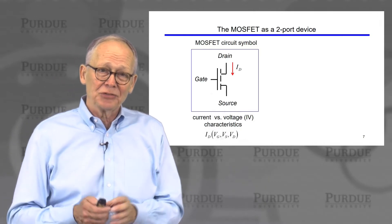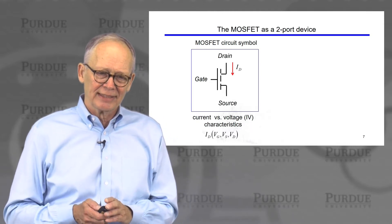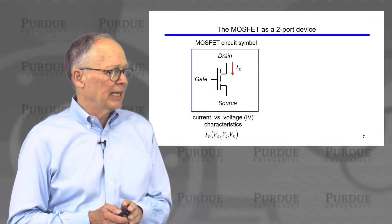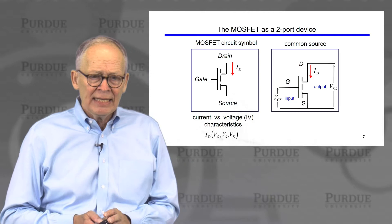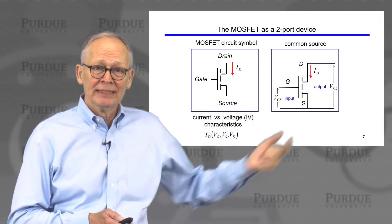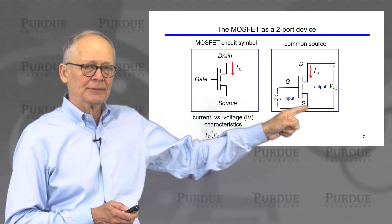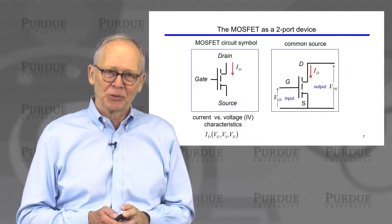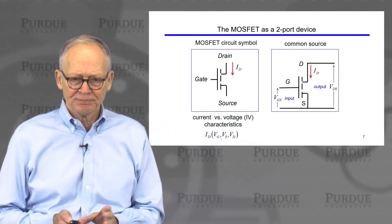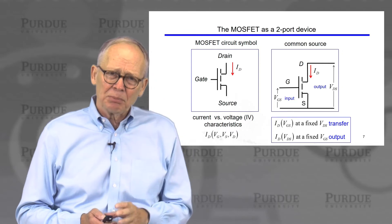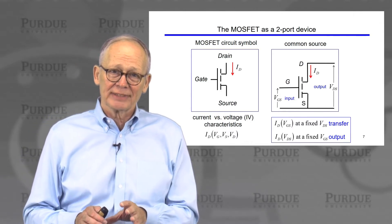For now, we just have a transistor with some leads — we apply some voltages and ask: what happens? We're going to get familiar with the current-voltage characteristics of the transistor. Here is our schematic of an n-channel MOS transistor. In the common source configuration, the source serves as both an input and an output terminal. We can plot the current versus voltage characteristics as a transfer characteristic or an output characteristic — terms you'll want to become familiar with.